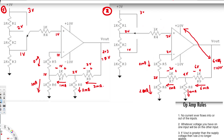If you want to calculate voltage gain, you can use delta V_out over delta V_in. For this circuit that's 5V over 1V, which equals a gain of 5. And that's how you solve op-amp circuits — I hope this helps, thanks for watching.